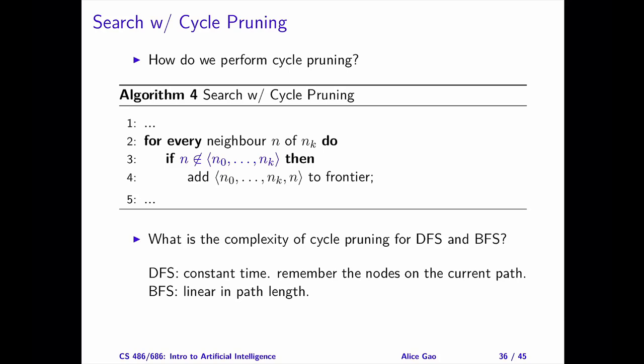Another way to implement cycle pruning for DFS is to add a boolean flag to each node. The flag is true if the node is on the current path and false otherwise. When we generate a new node, the flag tells us whether the new node is on the current path or not.